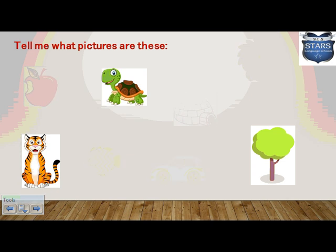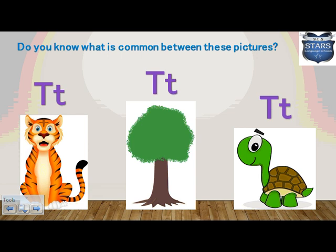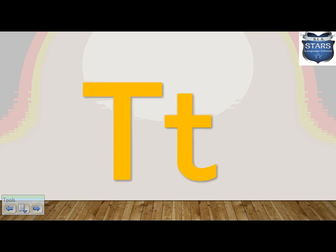We have three pictures left. Can you tell me what these are? We have a turtle — yes, it's a turtle! Tiger — excellent! We can see the tiger in the zoo. And we have a tree. Do you know what's common between tiger, tree, and turtle? Yes, they all start with letter T!